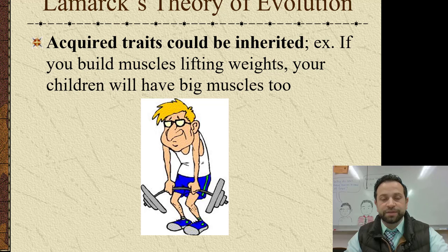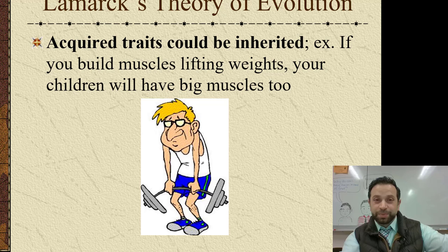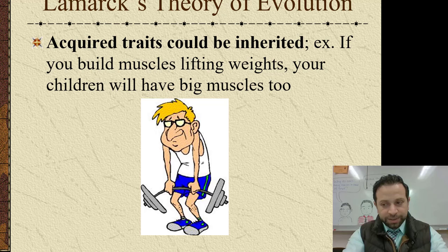He also talked about acquired traits. Lamarck said that if you build muscles lifting weights, your offspring — your children — will have big muscles too because of the big muscles that you have built. Which would be awesome if that was true, but we know that that is not true. Good try, Lamarck, but not correct.